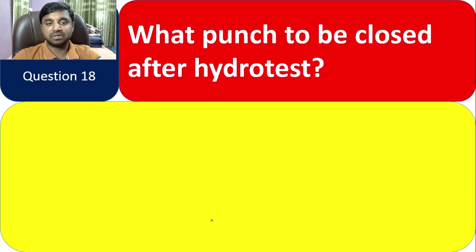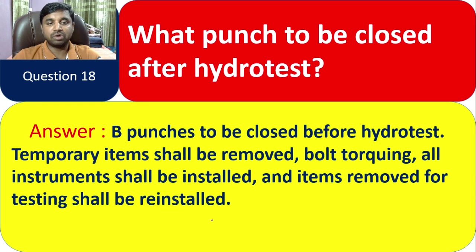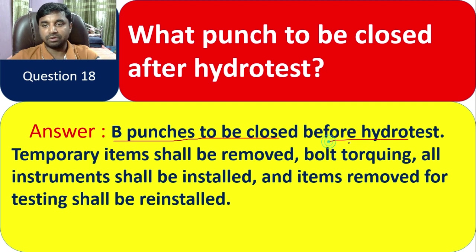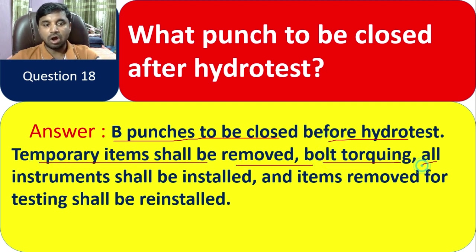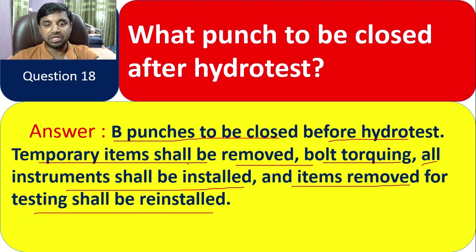Question 18: What punches are to be closed after hydro test? There are two types: A punch and B punch. B punches are to be closed before hydro test — temporary items shall be removed, bolt torquing should be done, all instruments shall be installed, and items removed for testing shall be reinstalled. B punch is a very important part to be closed after hydro test.